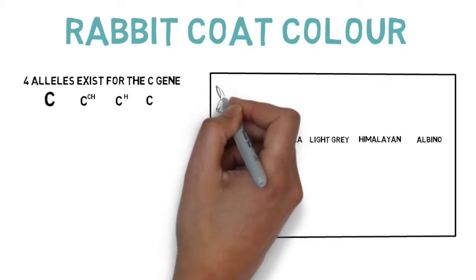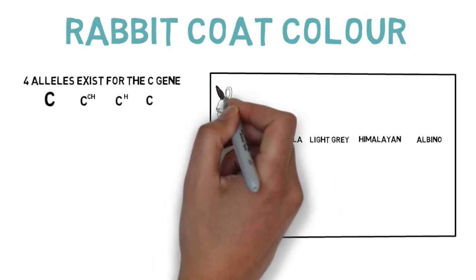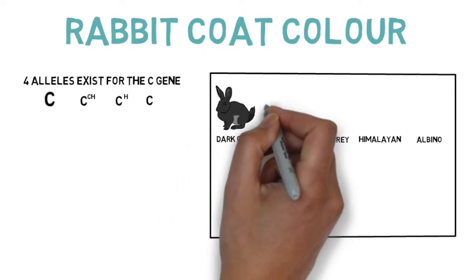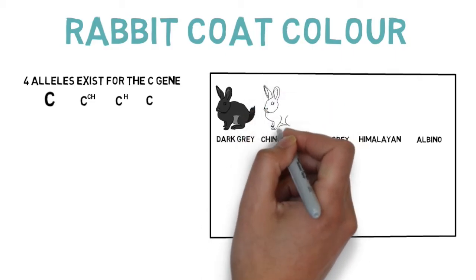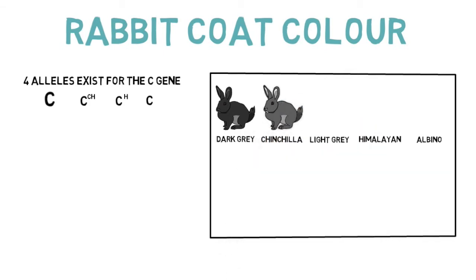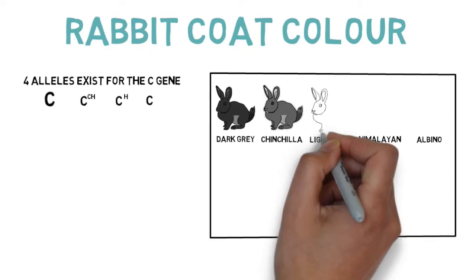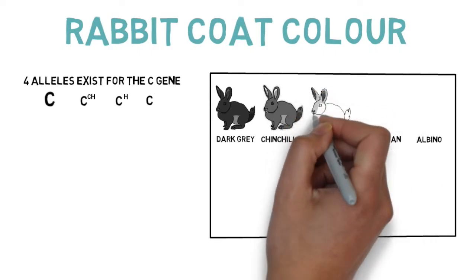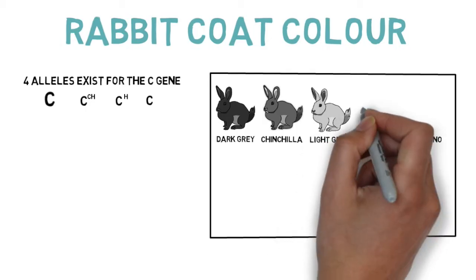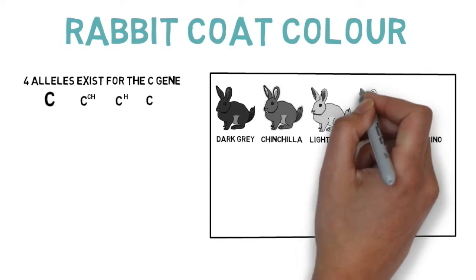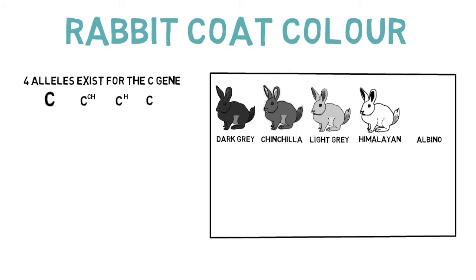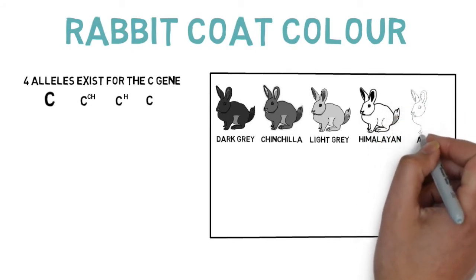Dark gray rabbits have a very dark coat. Chinchilla rabbits have a mix of dark and light hairs, giving them a grayish color. Light gray rabbits have a lighter fur color, but not as light as albino rabbits. Himalayan rabbits have a color point pattern, meaning they have a white body with dark ears, face, feet, and tail. Albino rabbits have a pure white coat.